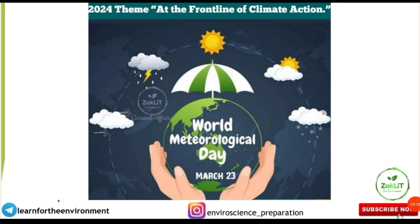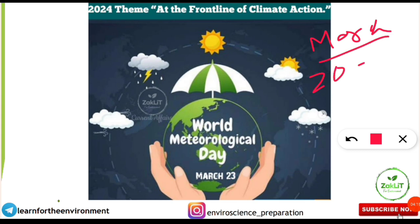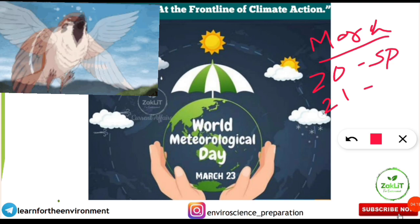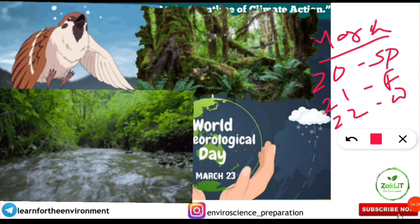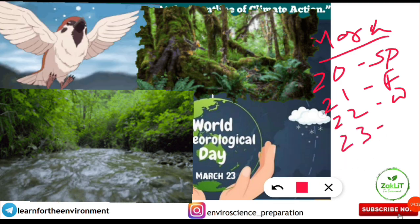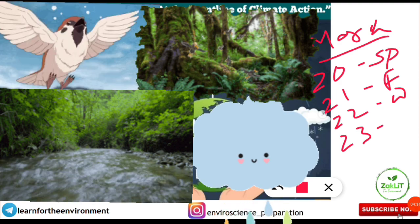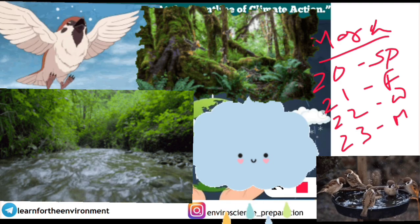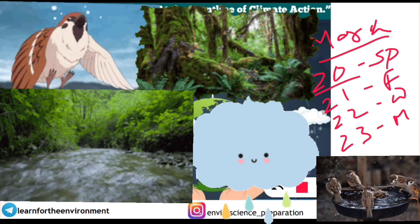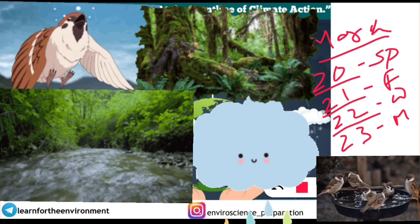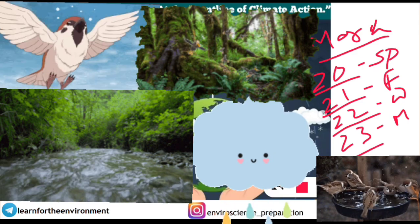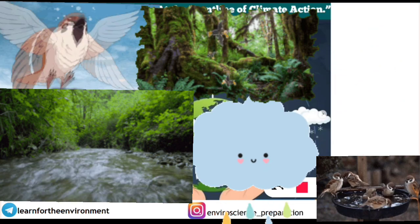Here is a memory trick for these four consecutive days in March: on 20th March, a sparrow comes; on 21st it goes to the forest (International Day of Forests); on 22nd it searches for water (World Water Day); and on 23rd the meteorology changes and rain happens — that's World Meteorological Day. This way you can remember all four days easily.